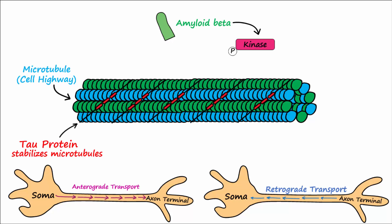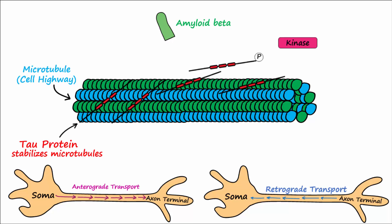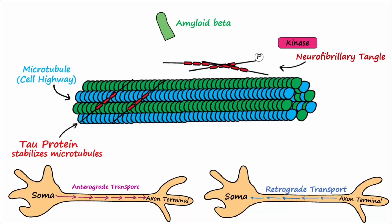In the pathogenesis of AD, amyloid beta activates an intracellular kinase that phosphorylates tau proteins. In the hyperphosphorylated state, tau proteins detach from the microtubules and begin to aggregate inside the cell to form what are called neurofibrillary tangles.